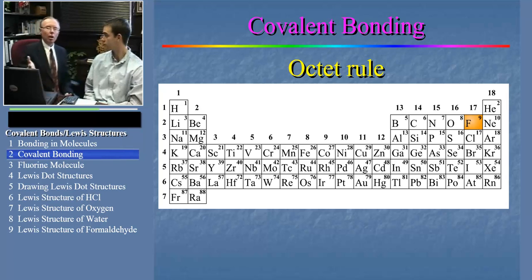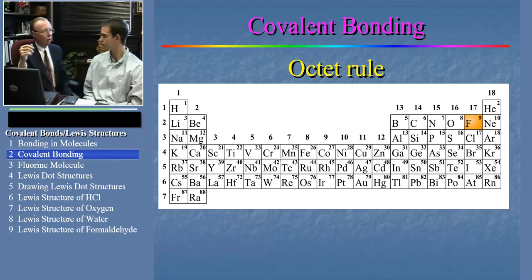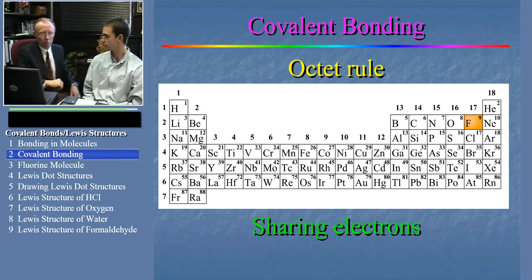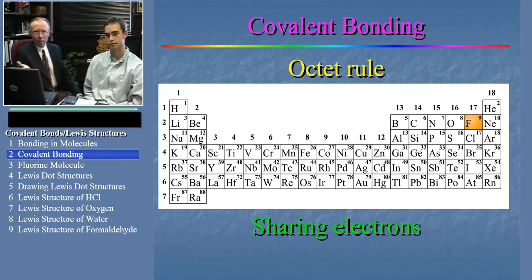Now, it could do this by taking an electron from a neighboring atom, which will be willing to give an electron up. Take sodium, for example. But what if the neighboring atom doesn't want to give up an electron? What if it also needs another electron to satisfy the octet rule? Well, in that case, they can both satisfy the octet rule by sharing electrons. And that's the principle upon which covalent bonding is based.